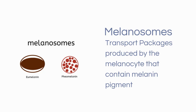In contrast, pheomelanin is the reddish-brown melanin seen in lighter skin types or those with red or blonde hair. As you can see, the pigment is not uniform and is scattered within the casing. These are referred to as pheomelanosomes. Melanosomes synthesize only one type of melanin — either eumelanin or pheomelanin — depending on the melanogenesis pathway they've taken.